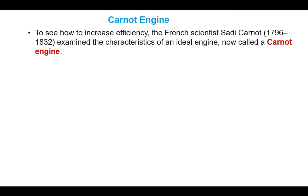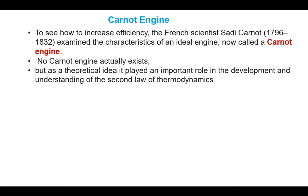To see how to increase efficiency, a French scientist, Carnot, around 1796 to 1832, examined the characteristics of an ideal engine, now called a Carnot engine. No Carnot engine actually exists, but as a theoretical idea it played an important role in the development and understanding of the second law of thermodynamics.